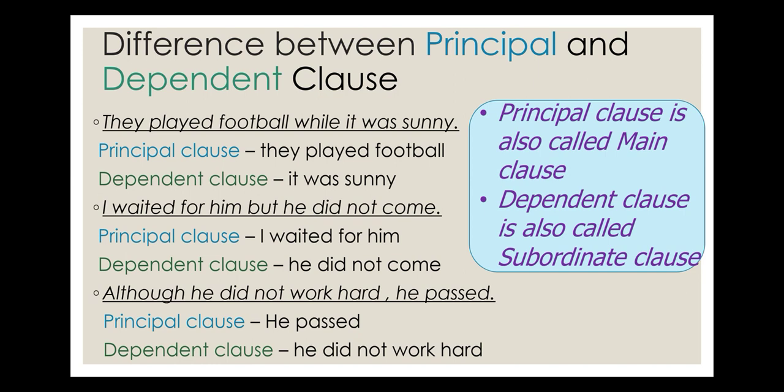Consider: 'They played football while it was sunny.' Here, 'they played football' is a complete sentence — that is the principal clause. 'It was sunny' is incomplete on its own — it is the dependent clause, connected by the conjunction 'while.' Similarly, 'I waited for him but he did not come' — 'I waited for him' is the principal clause and 'he did not come' is the dependent clause, connected by 'but.'